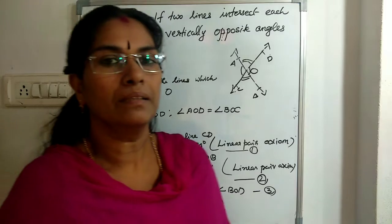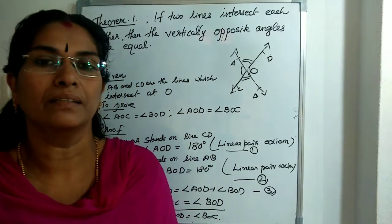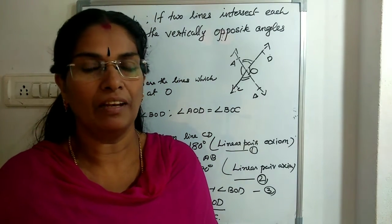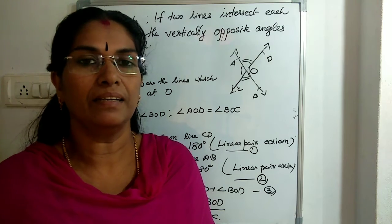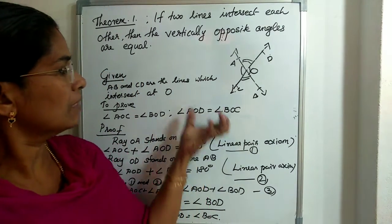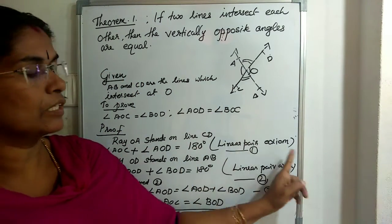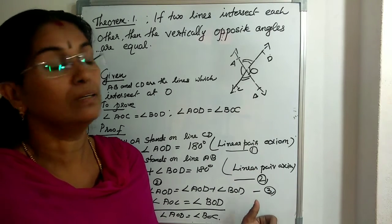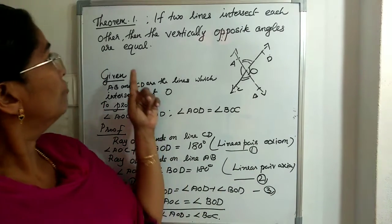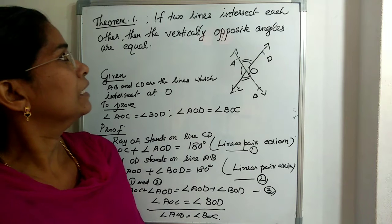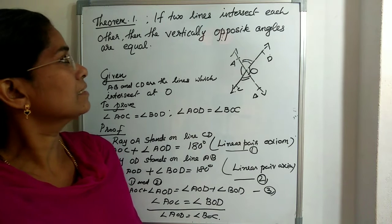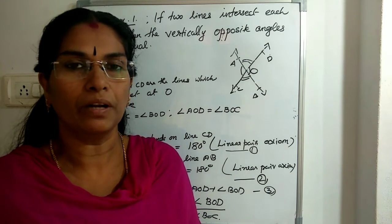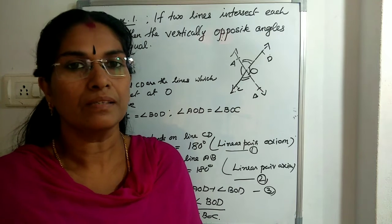This theorem's proof is very important. It will also come in the exam, so study well. Write out each step and study it carefully — you must also write the reason for each step. Everything is important in this proof. Theorem 6.1: if two lines intersect each other, then the vertically opposite angles are equal. It is a very important theorem.